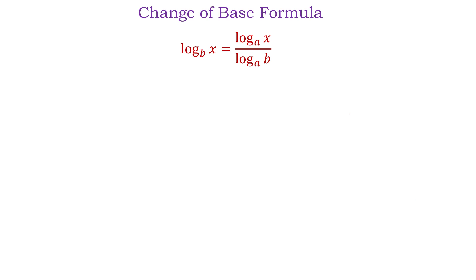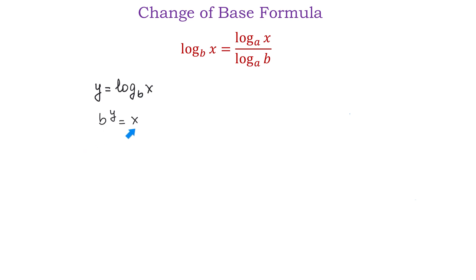Let the left side of this formula be equal to y. So we will write y equals log base b of x. In this equation b is the base, y is the exponent, and x is the result. Then we can rewrite this equation in exponential form: the base b raised to exponent y equals the result x. Now, in an equation if we perform an operation on one side we have to perform the same operation on the other side. So we will take a logarithm with a new base a of both sides.